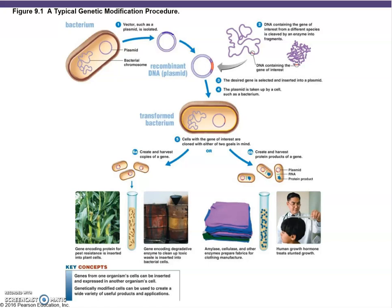Here's your plasmid vector — a circle of DNA. Using biotechnology, you take a gene of interest from another organism and insert it into the circle. You cut the circle open and insert that piece of genetic information into the plasmid. Now it's recombinant DNA — recombined — and you put it back into bacteria.